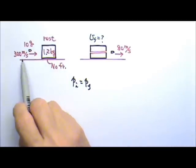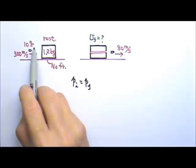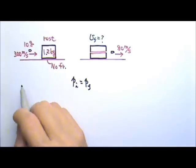So initially, the bullet is the one with momentum. The block has no momentum. Over here, the bullet's mass is given as 10 g.